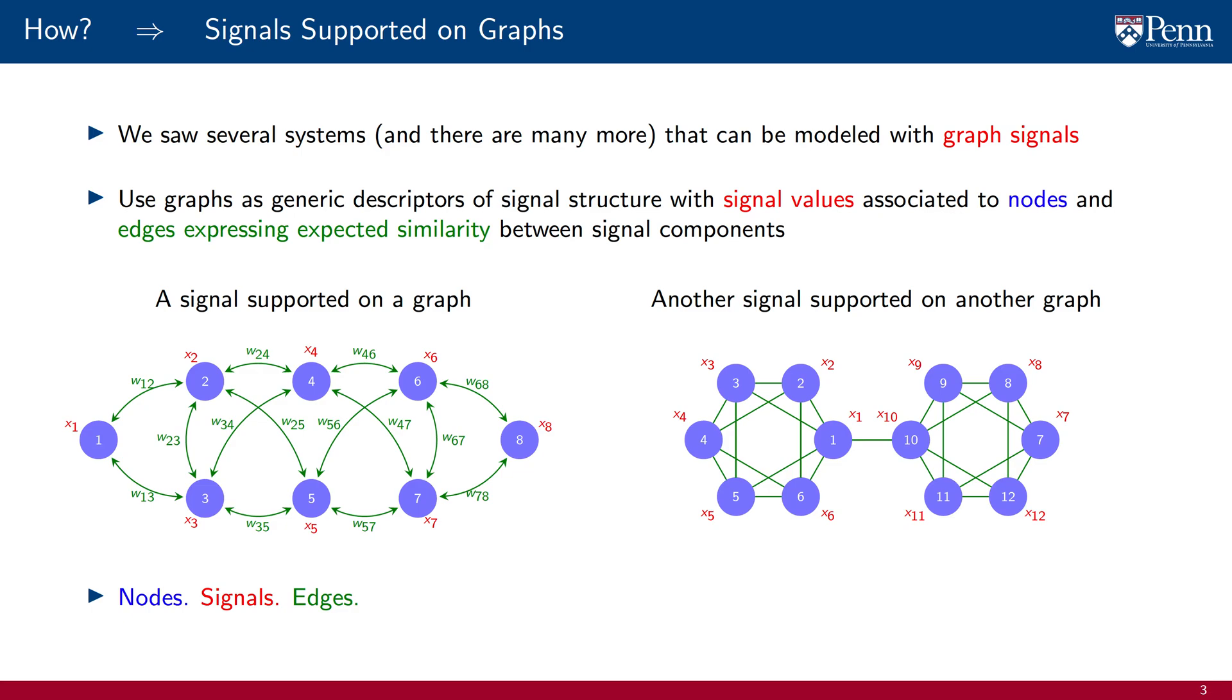If nodes are customers, signal values are ratings, and edges are similarities, we have a description of a recommendation system. If nodes are transceivers, signals are quality of service requirements, and edges are wireless channel strengths, we have a model of a wireless communication network. And if nodes are drones, signals are velocities, and edges are sensing and communication ranges, we have a model of an autonomous system.